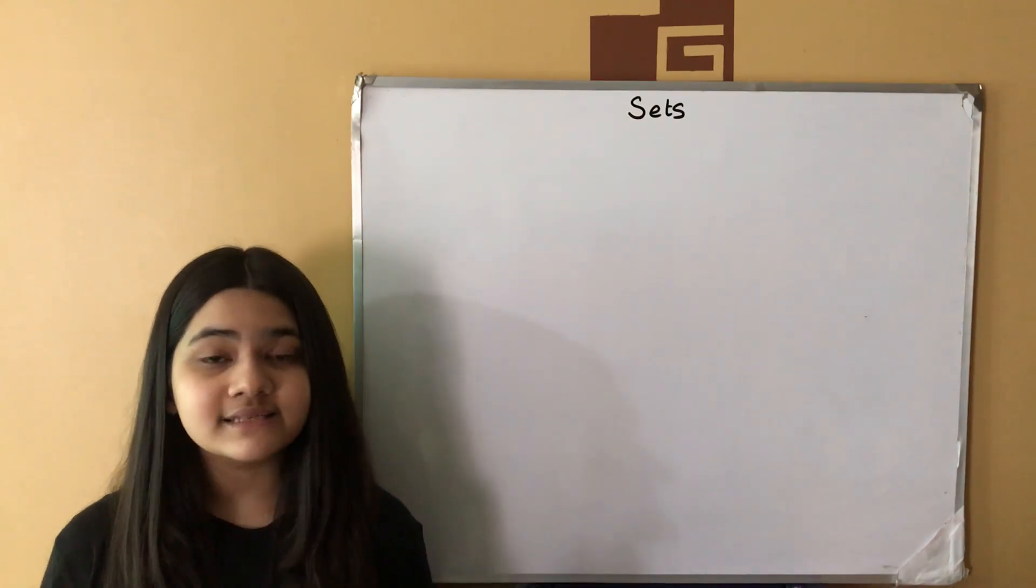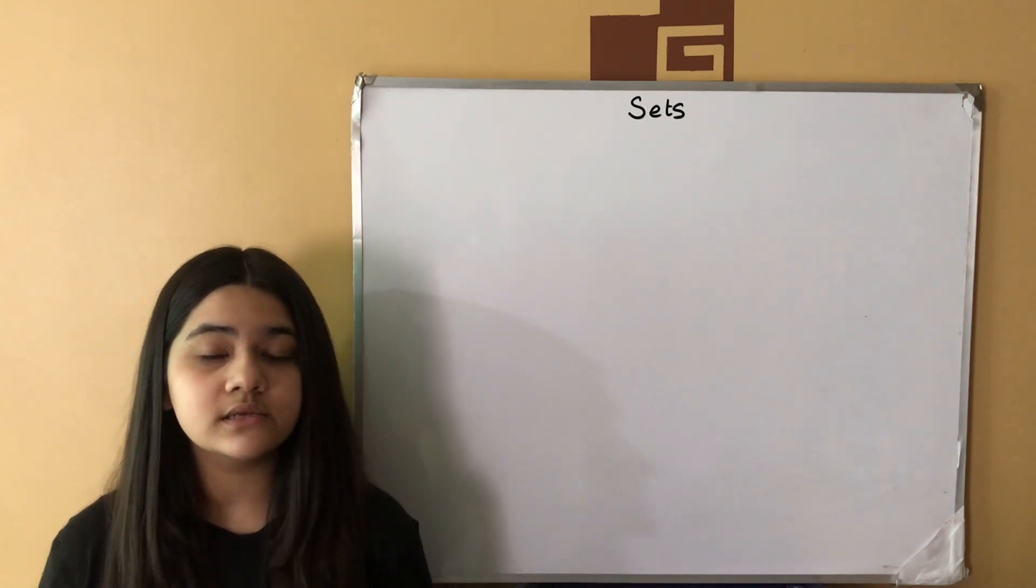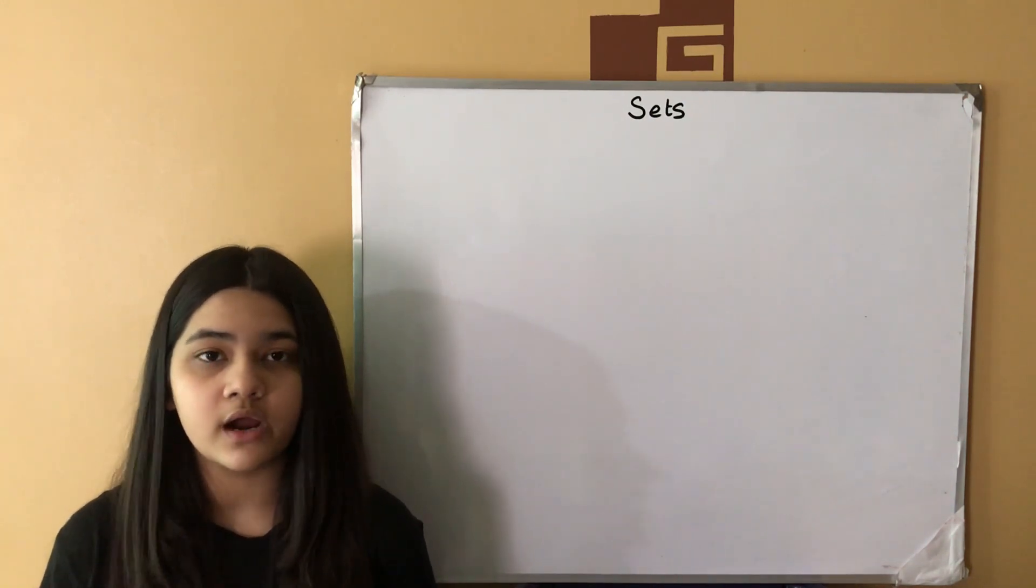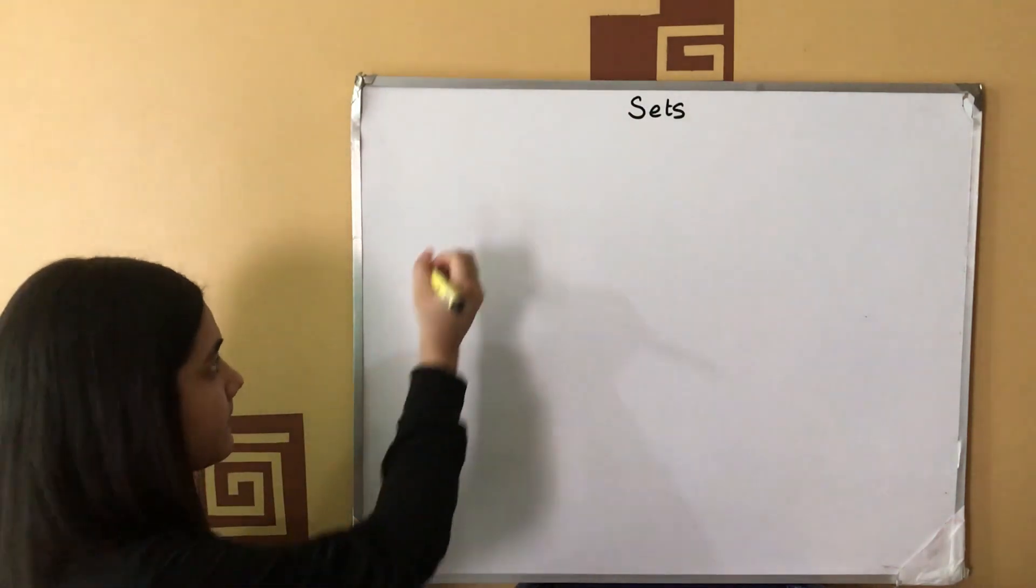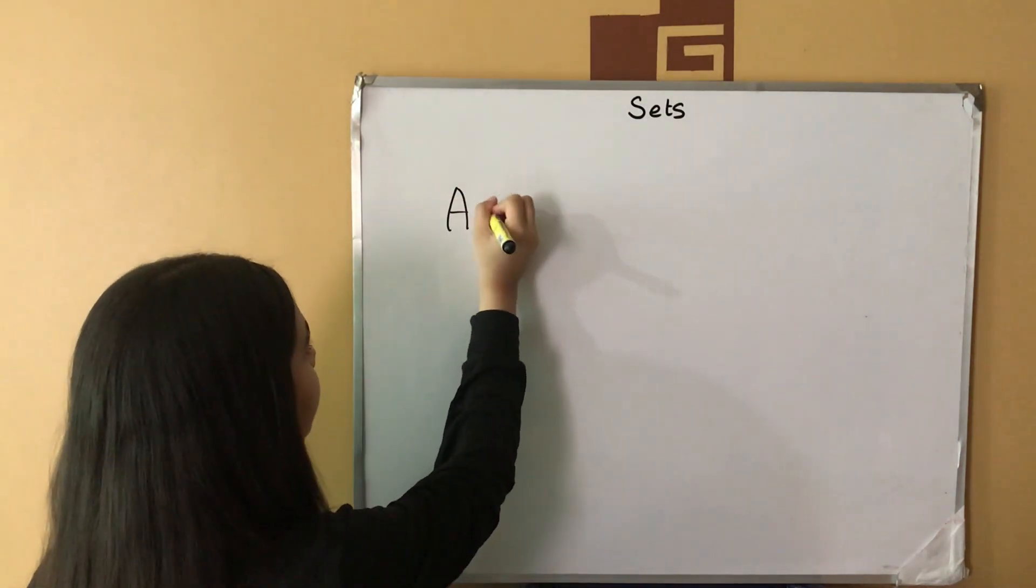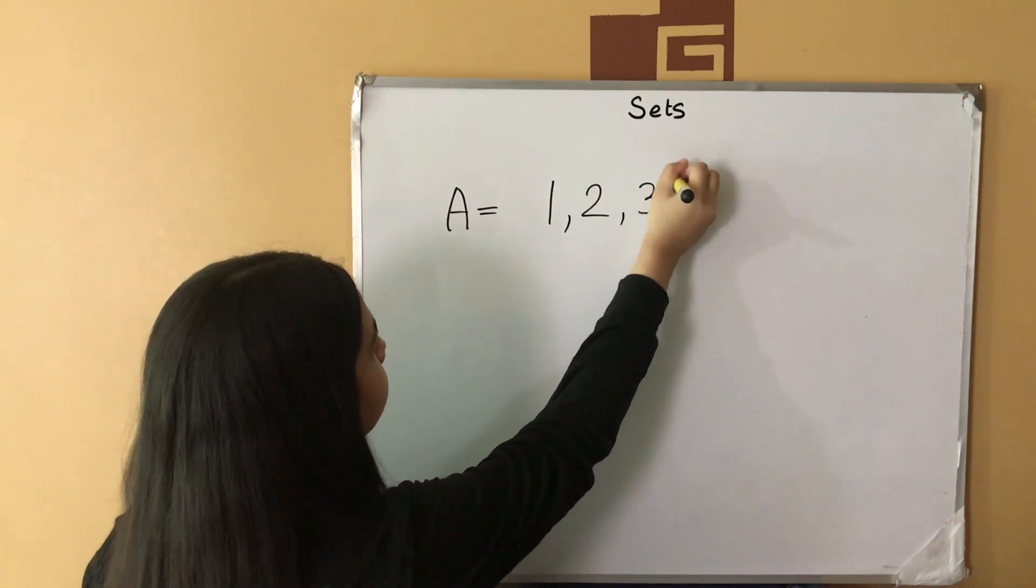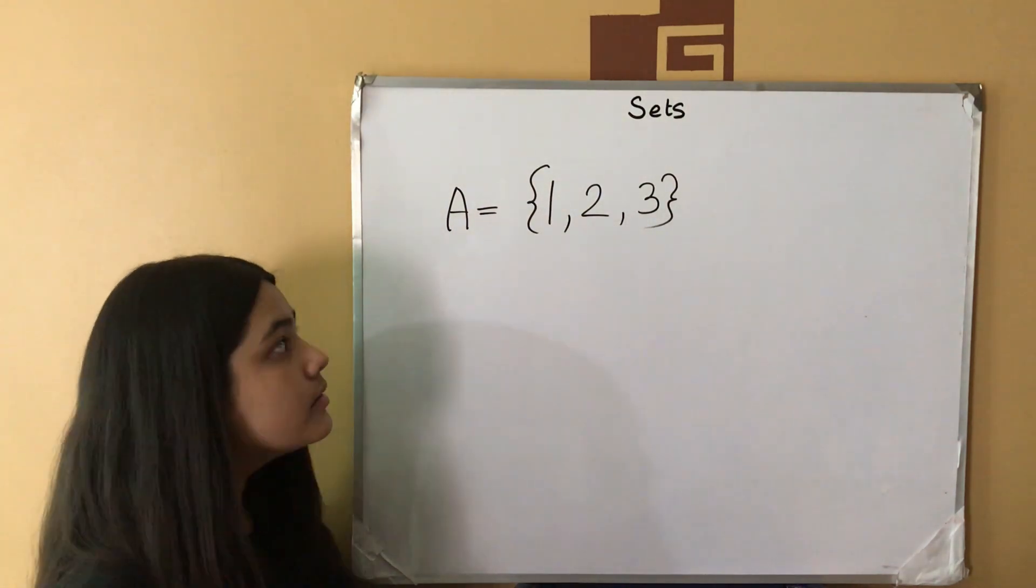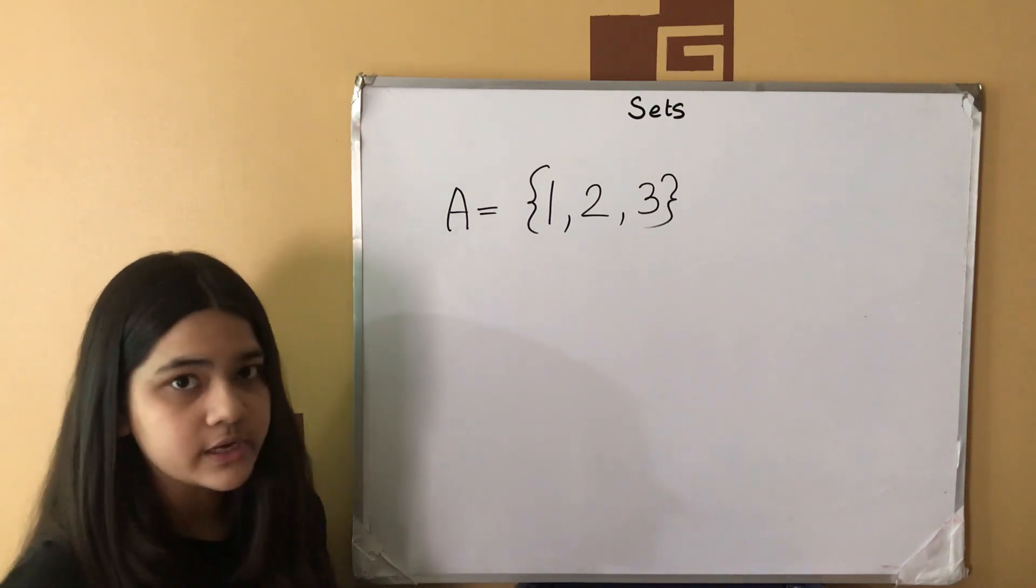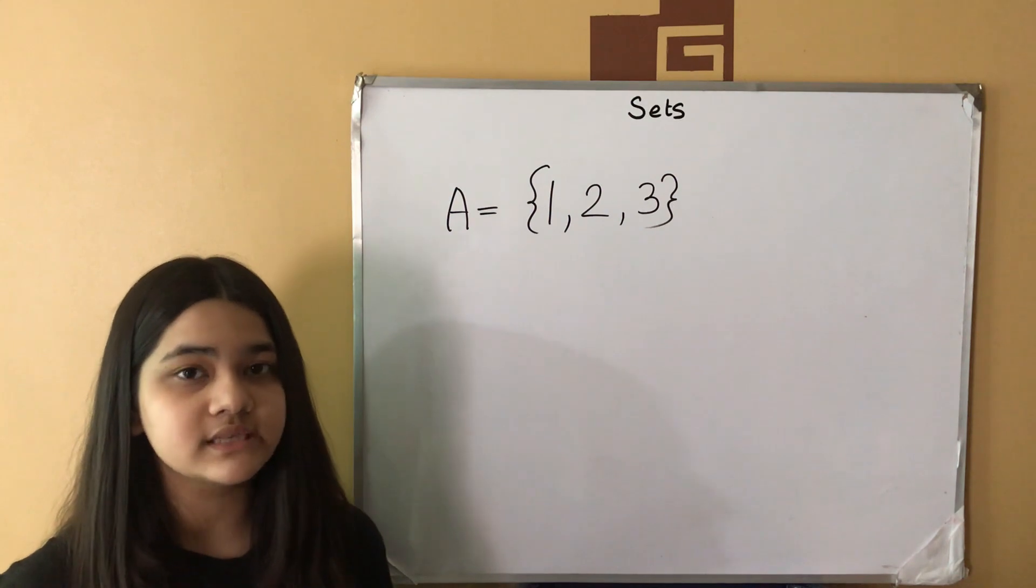What is a set? A set is a collection of well-defined and distinct objects called elements. We can list sets using the listing method where all the elements in the set are separated using commas and they're enclosed in second brackets. For example, this is set A and it contains the elements 1, 2 and 3. Here A is the name of the set and it has the elements 1, 2 and 3. All the elements are separated using commas and they're enclosed in second brackets.